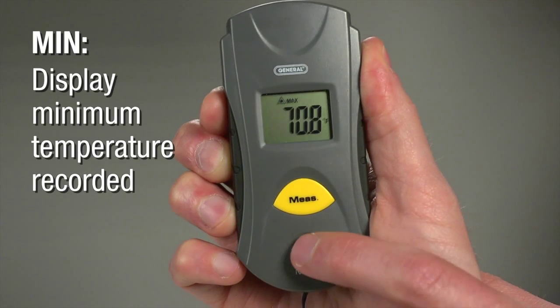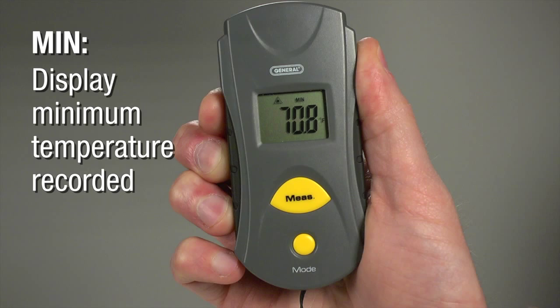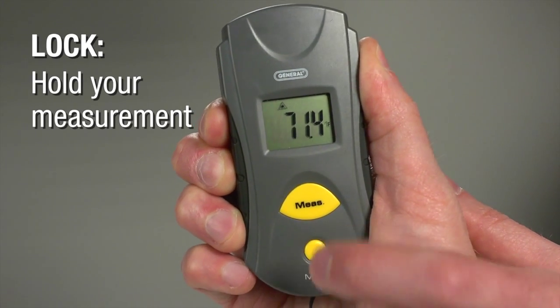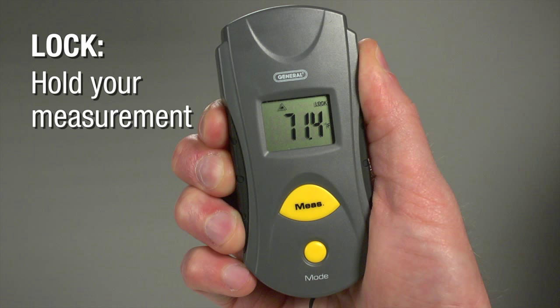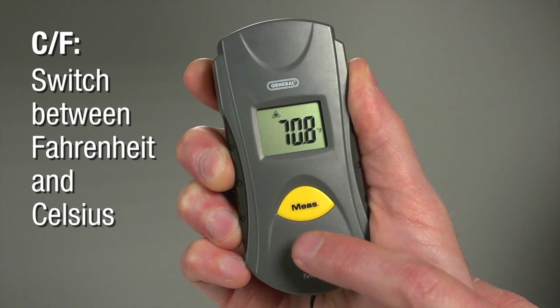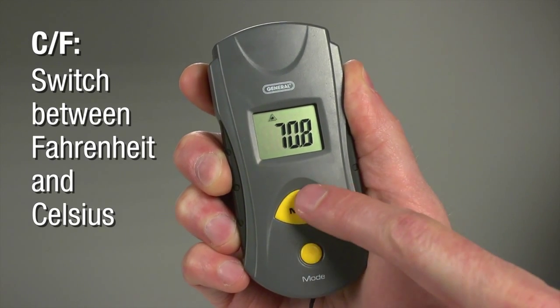Press mode twice for min to display minimum temperature recorded during a session. Press three times for lock. Now your measurement feature stays on without holding measure, displaying temperatures with the laser pointer off. Press four times for CF mode. Now press measure to switch between Fahrenheit and Celsius.